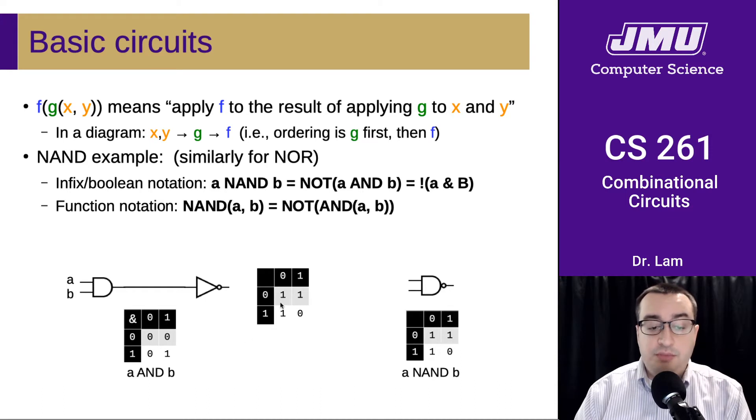So anywhere we had a 0, it's now going to be a 1. And wherever it was a 1, now it's going to be a 0. And if we look at that truth table, that truth table is identical to the truth table for NAND. And so we can see that this is equivalent to the NAND gate.